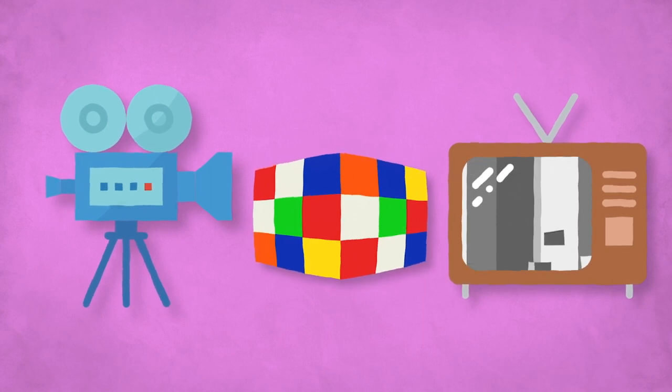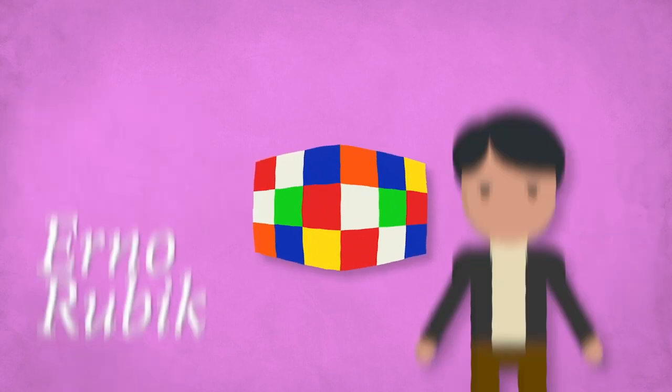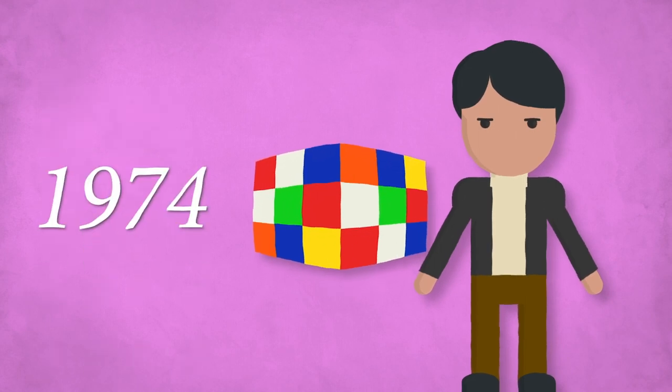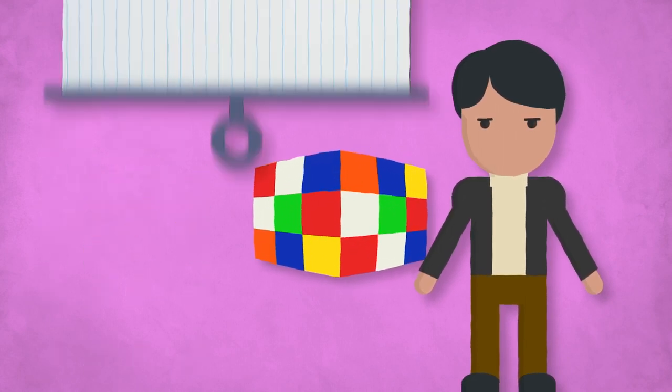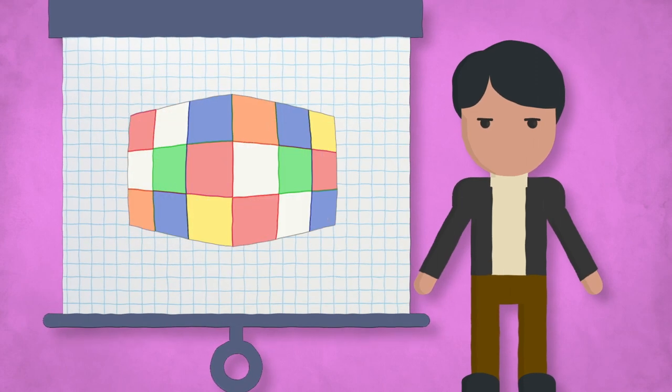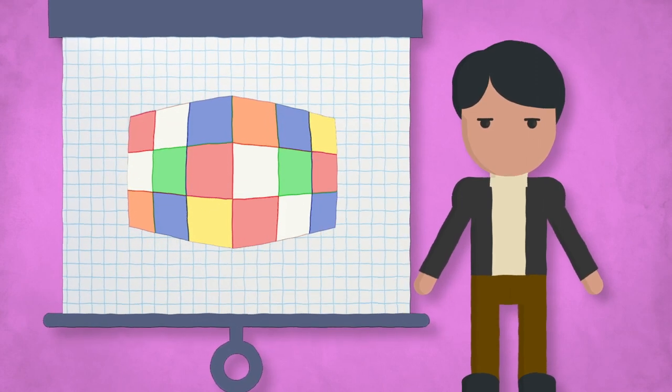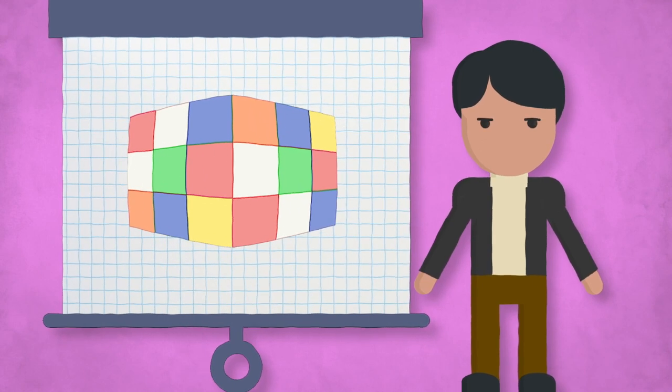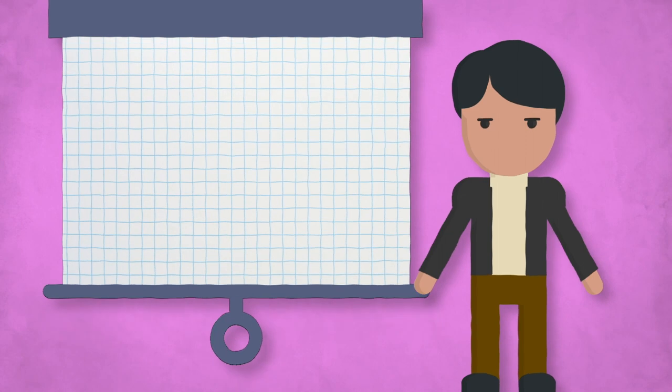It wasn't even supposed to be a toy at all. Not originally, anyway. Erno Rubik built his cube in 1974. He variously explained that it was meant to be a teaching tool to describe three-dimensional design or algebraic group theory. The truth is Rubik made his cube for no reason at all, except for fun.